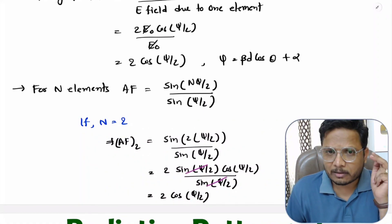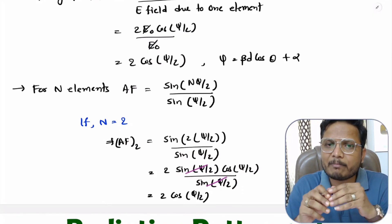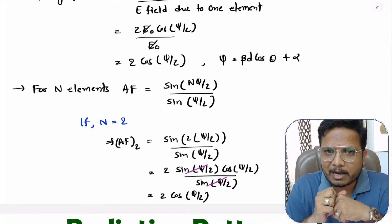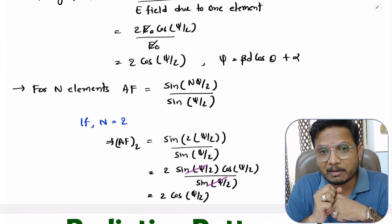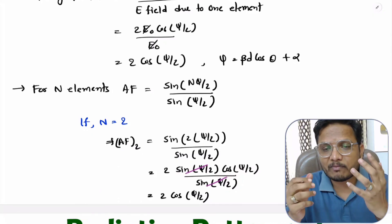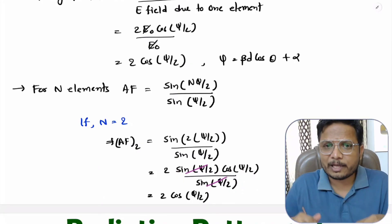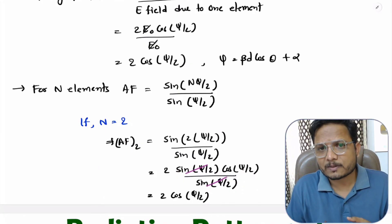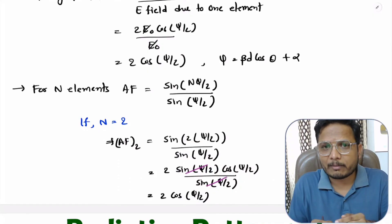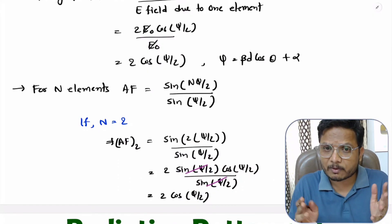Based on this array factor, one can identify many other parameters like location of maxima, location of minima, half power beam width, and first null beam width. I will explain all those things in the next coming videos. If you have anything to share, note it down in the comment section — I will be happy to help. Thank you so much for watching this video.